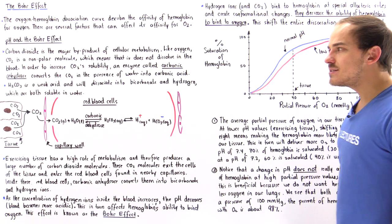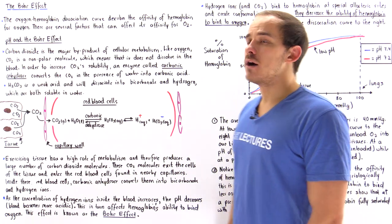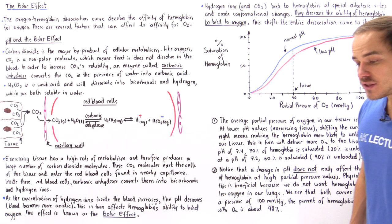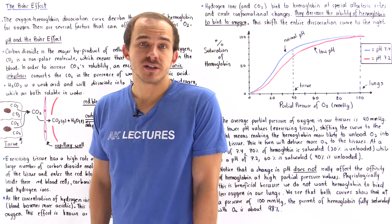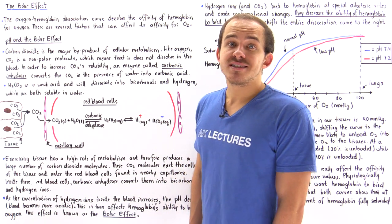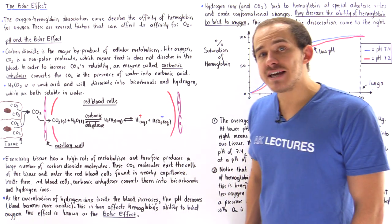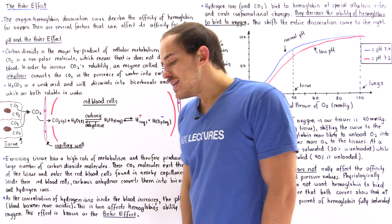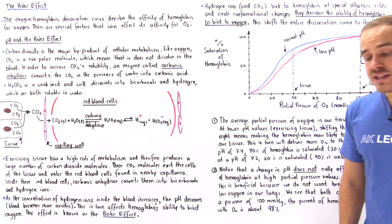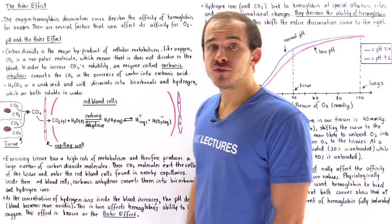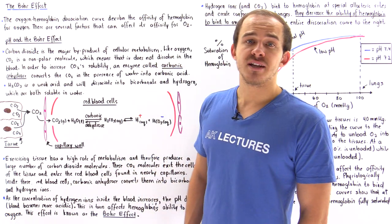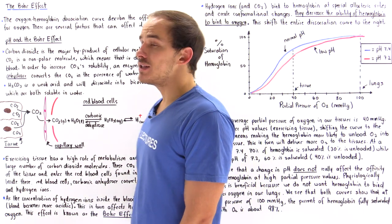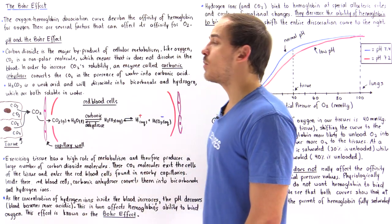Let's begin by discussing what actually affects the pH of our blood plasma. Inside the cells of our tissues, cells undergo many types of metabolic processes, for example cellular respiration, and the major waste byproduct produced is carbon dioxide. Carbon dioxide is non-polar because it consists of two polar bonds that point in opposite directions, so the dipole moments cancel out, giving carbon dioxide a net dipole moment of zero.